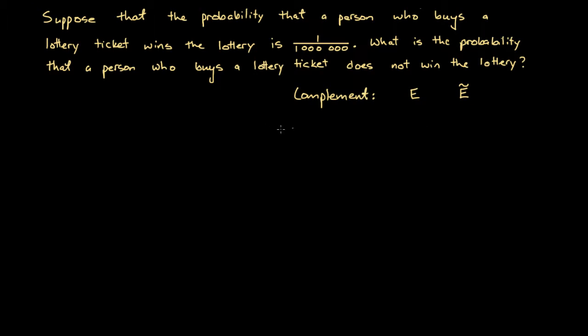So for instance, here we could say that the event winning the lottery, we could denote that as W, and not winning the lottery is W tilde. So if we were flipping a coin, for instance, we could say that heads is one event, getting heads, and getting not heads is another event, H tilde. And here H tilde is the same as T, because tails means that you don't get heads.